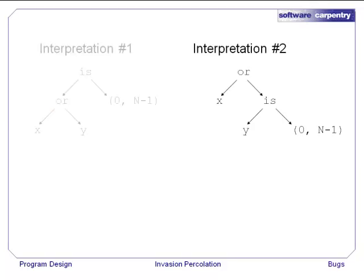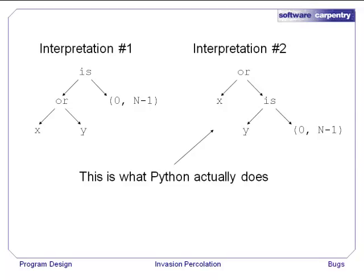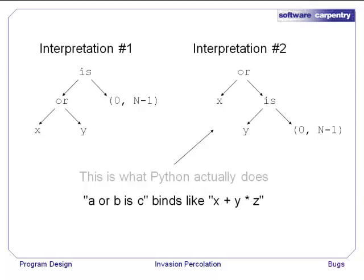Interpretation number 2 is x or y is 0 and minus 1 and the tree on the right shows this version. Well, y is never a two-integer tuple so this is just x or false which is just x is not 0 and this isn't what we want either. The expression on the right is what Python actually does. The is operator binds more tightly than or just as times binds more tightly than plus.